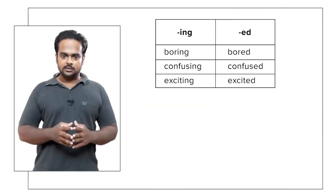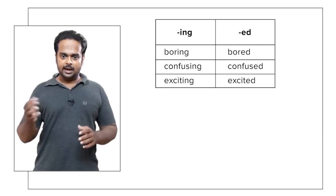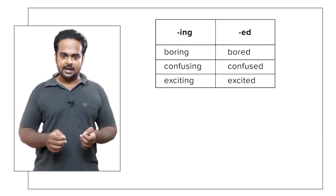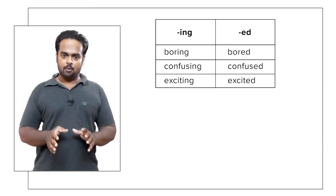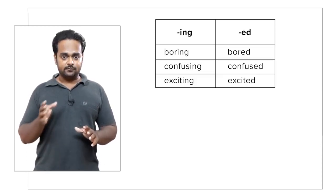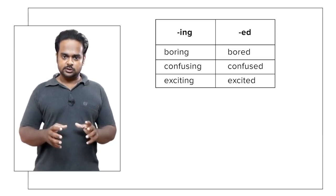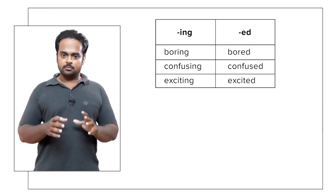Now in English there are lots and lots of descriptive adjectives. Some of them are formed from nouns, verbs, and even other adjectives. But one area where students commonly make mistakes is adjectives formed from verbs using the endings ed and ing. Have a look at this chart. On the left you see three ing adjectives and on the right, three ed adjectives. The adjectives boring and bored are formed from the verb bore, confusing and confused from the verb confuse, and exciting and excited from the verb excite.